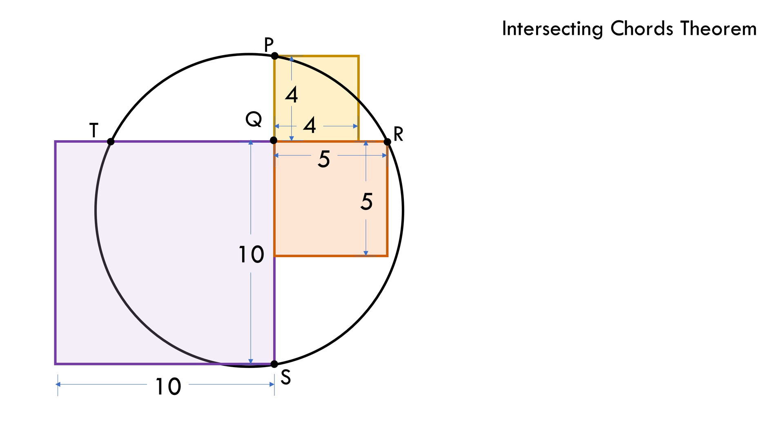Now that we know this, let's apply it in our circle. Here RT and PS are chords to the circle intersecting at point Q.